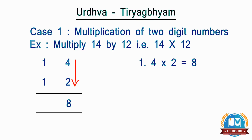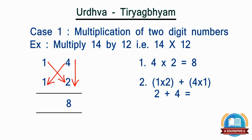Now, Step 2: diagonally multiply the first digit of the number 14, i.e. 1, and second digit of the second number 12, i.e. 2 — it becomes 1 × 2. Then multiply the second digit of the first number, i.e. 4, and first digit of the second number, i.e. 1 — it becomes 4 × 1. Add these two: 2 plus 4 equals 6. It gives the 2nd digit of the answer.